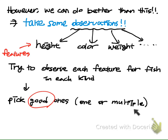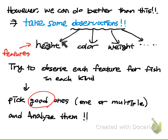Among all this information, there may be one or two specific pieces of information that give us more information about how to classify the fish. We will analyze the good features — meaning, for height, in which range is the fish more likely to be bass than salmon, and for weight, in which range is the fish more likely to be salmon than bass. This is what I mean by analyzing them.